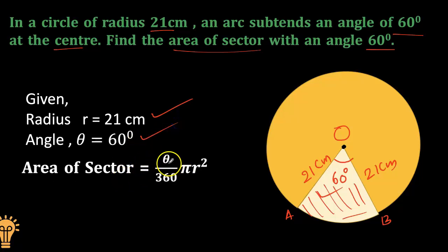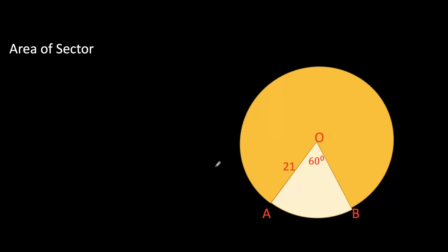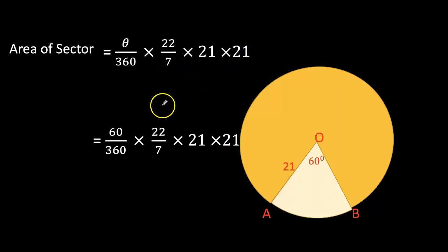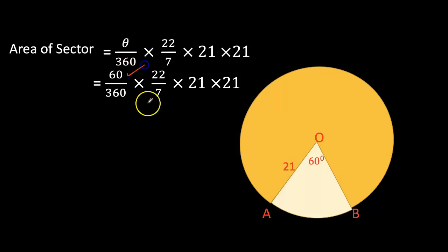Area of sector equals theta by 360 into pi r squared. Let us substitute the values. Area of sector equals theta by 360 into 22 by 7 into 21 into 21. The theta is 60 degrees substituted. Doing the calculation, we're getting area of sector equals 231 centimeters squared.